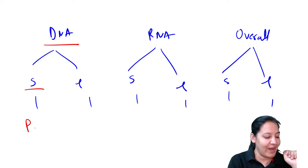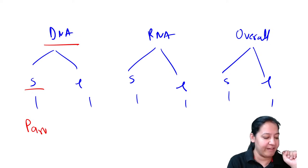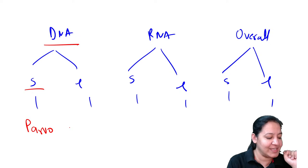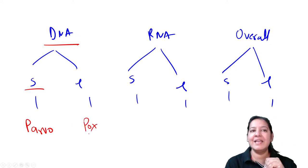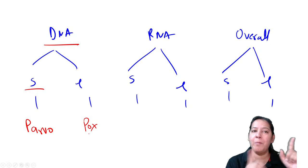Smallest DNA is Parvo. Largest DNA is Pox. Both start with P. Smallest RNA is Picorna. Largest RNA is Paramyxo. Again both P.